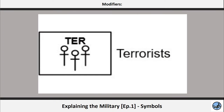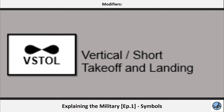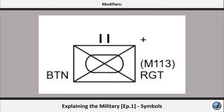Also, some modifiers may simply be letters in the unit symbol, like those that give you the possibility to recognize if the unit consists of terrorists or foreign fighters, or the modifier for vertical and/or short takeoff and landing planes. Another example of written modifiers is for special equipment, as stated before.